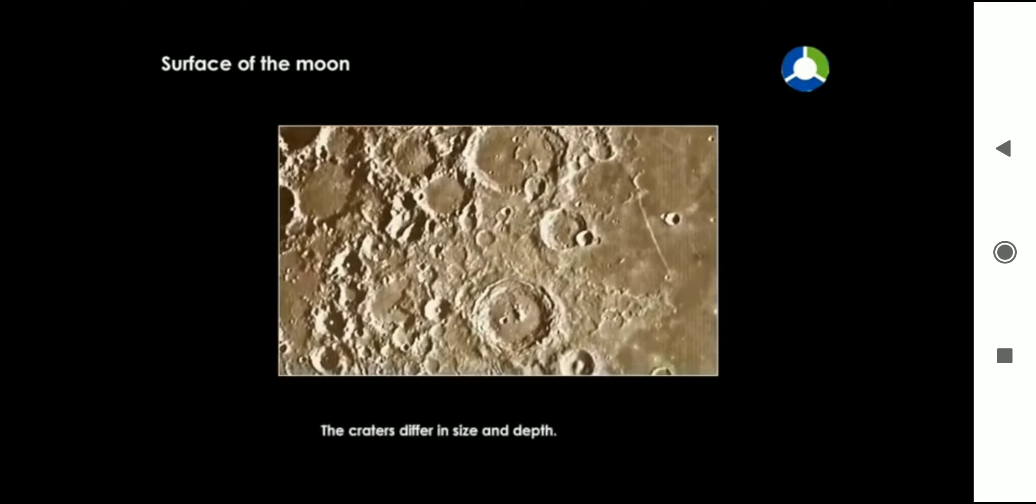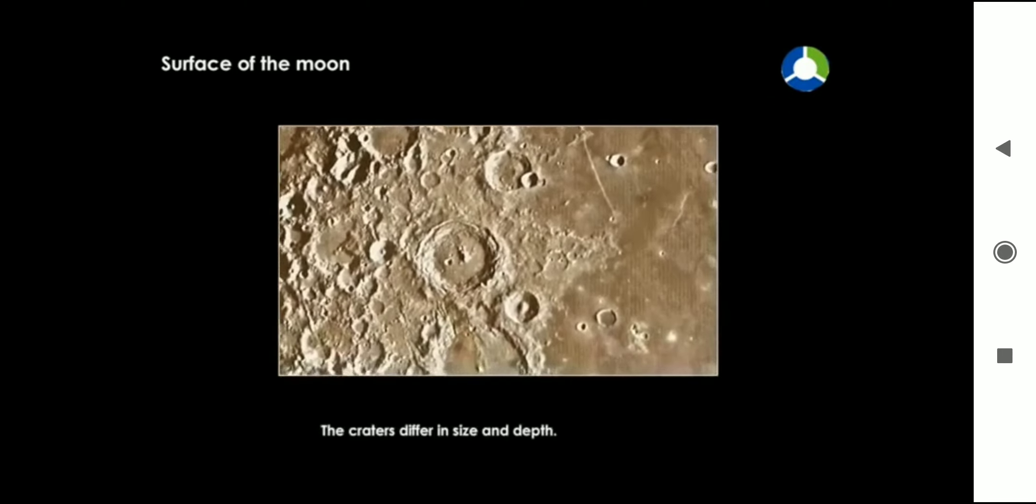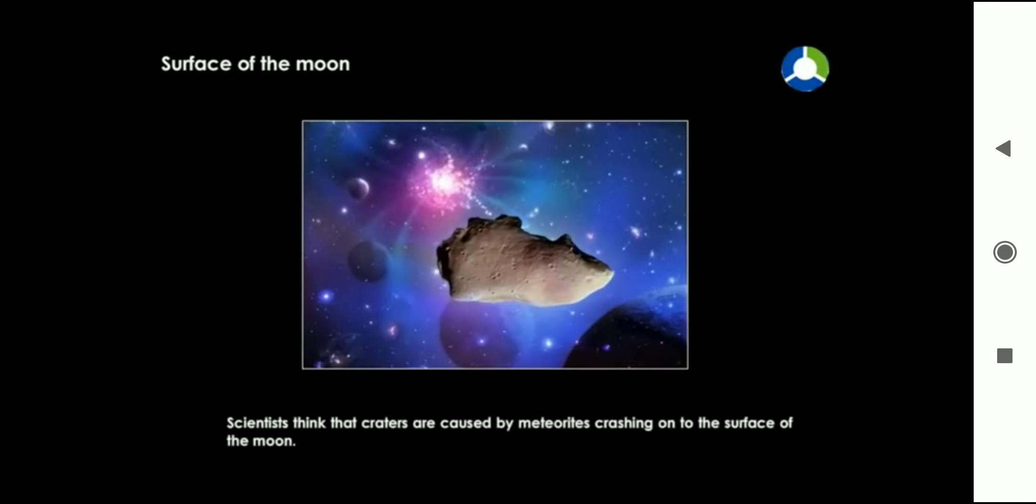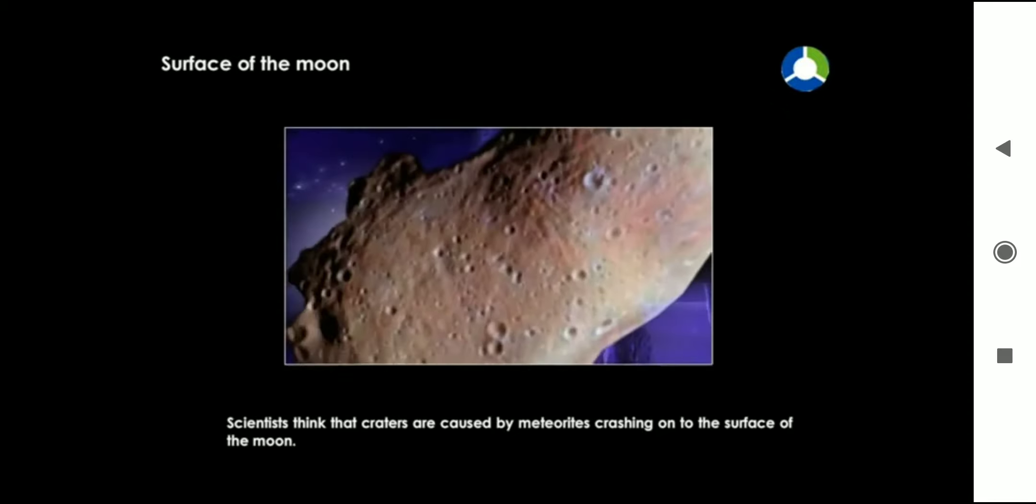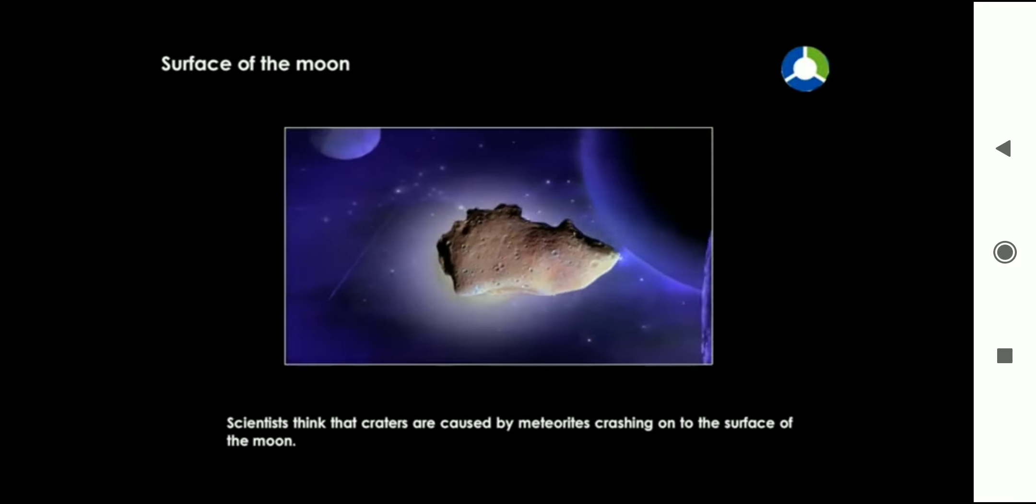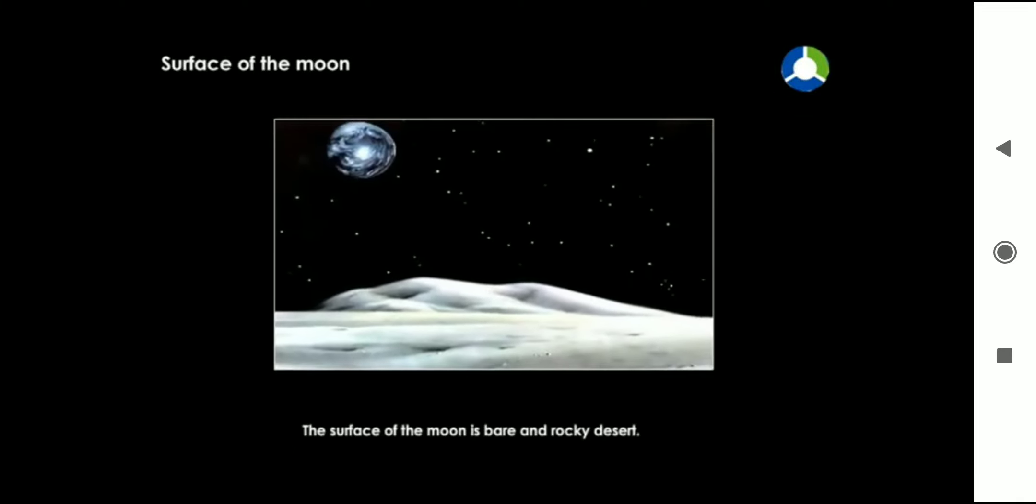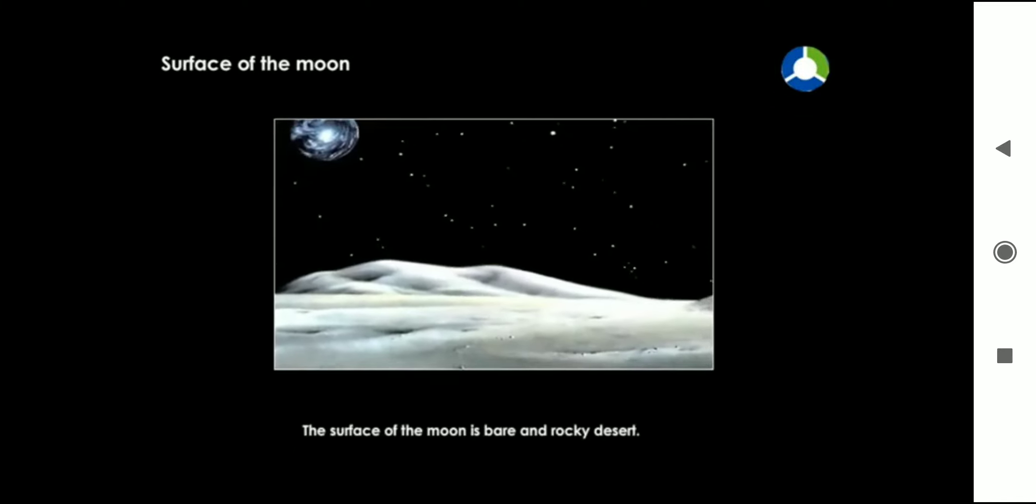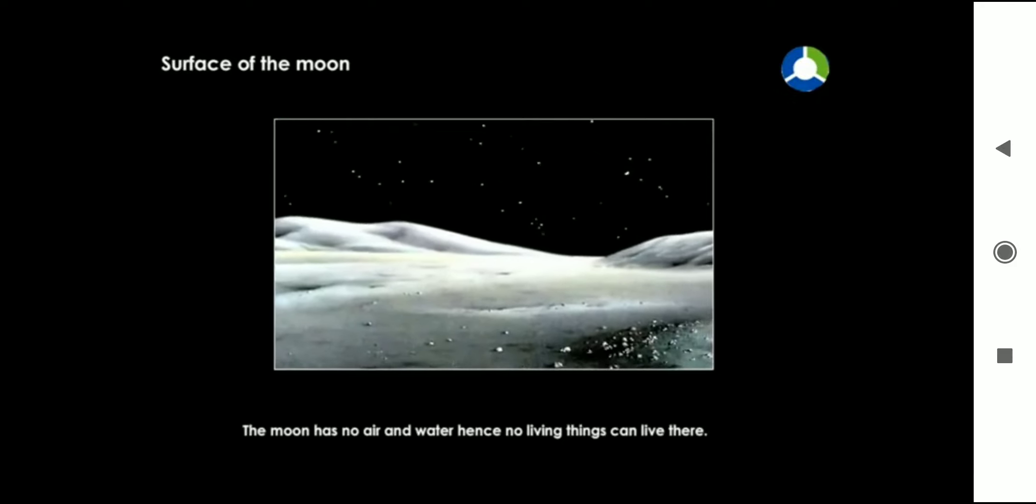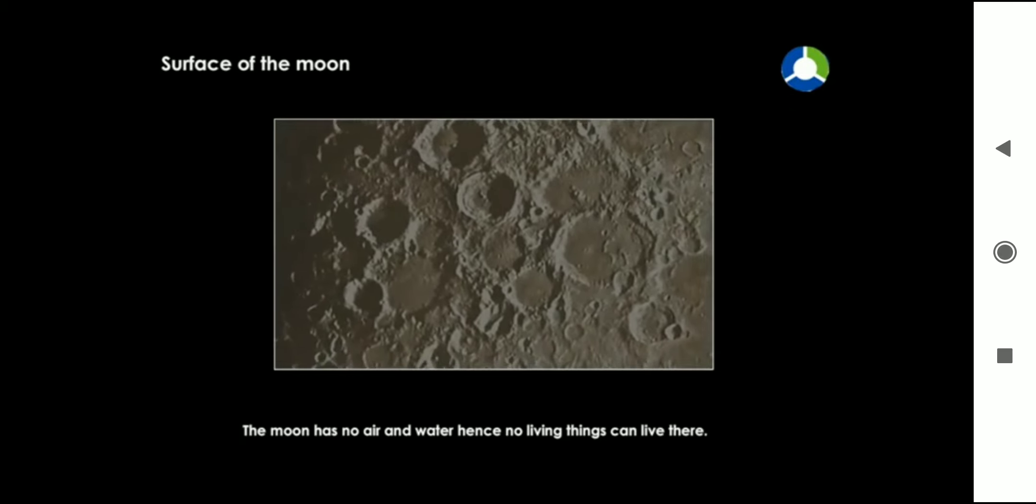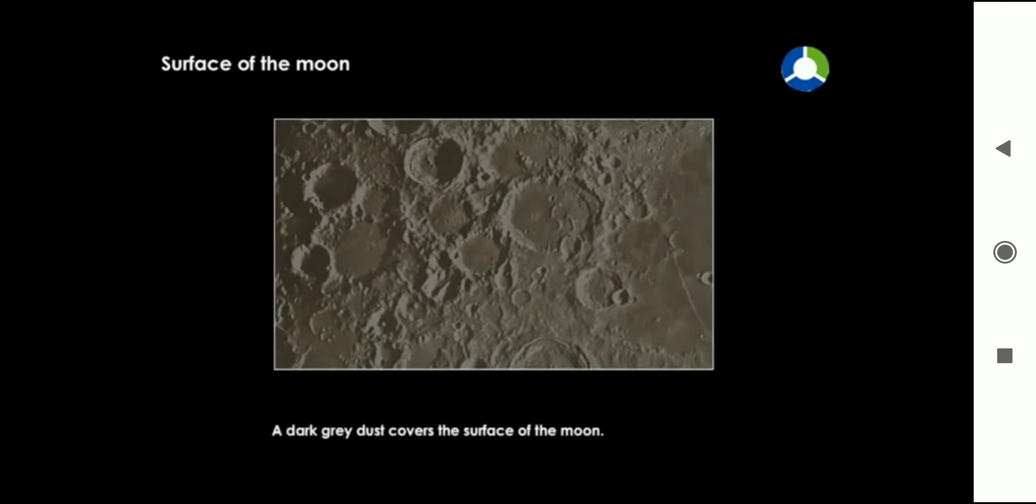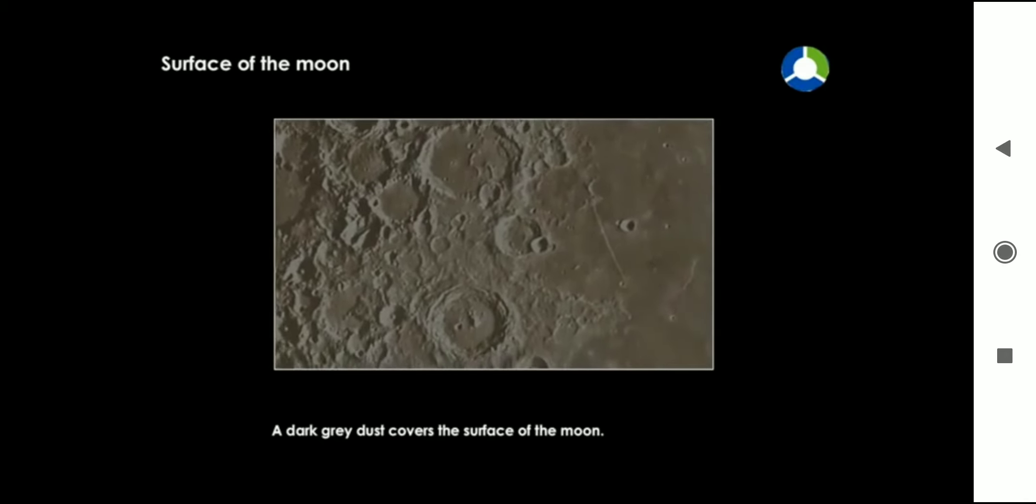The craters differ in size and depth. Scientists think that craters are caused by meteorites crashing onto the surface of the moon. The surface of the moon is bare and rocky desert. The moon has no air and water, hence no living things can live there. A dark gray dust covers the surface of the moon.